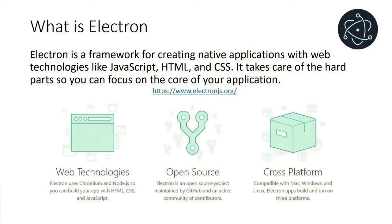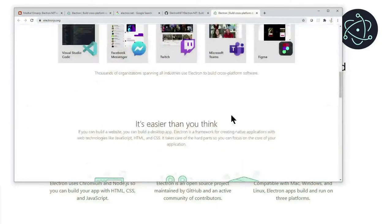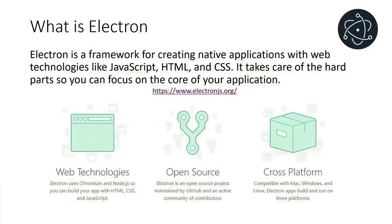Electron is a very popular framework for creating native applications with web technologies like JavaScript, HTML, and CSS. It takes care of the hard parts so you can focus on the core of your application. The website for Electron is electronjs.org and this site has everything you need to know about Electron. Electron uses Chromium and Node.js so you can build your applications with CSS, HTML, and JavaScript. It is also open source, hosted and maintained by GitHub.